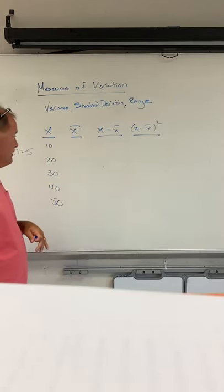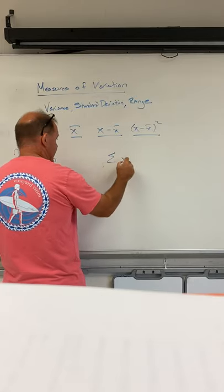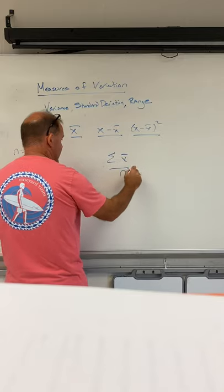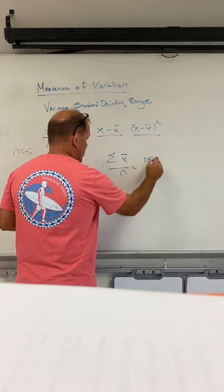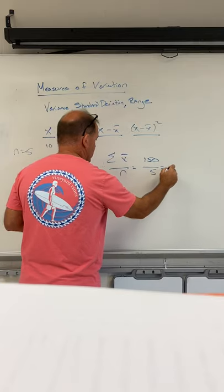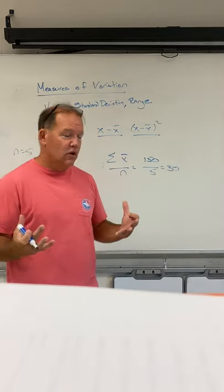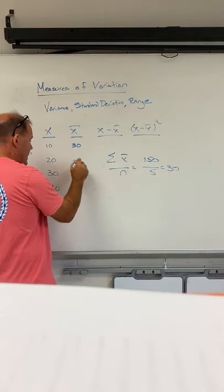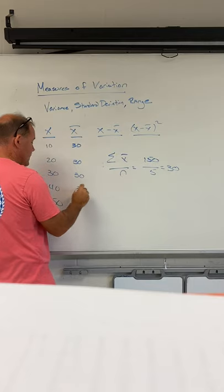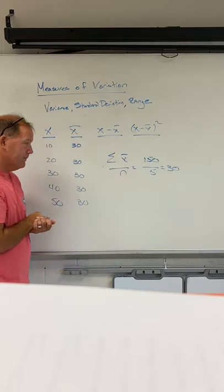If I was going to find the mean, the sum of my x values divided by my sample size. So if I add these up, that is 150 divided by five. So 30 is going to be the mean. So the average price of the paint, that is going to be our second column. Mean is X bar.